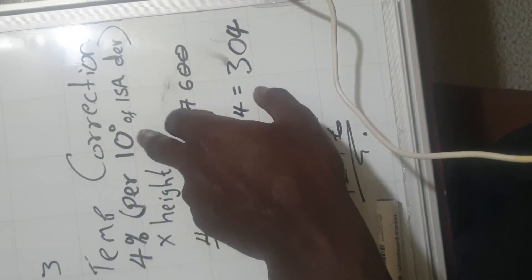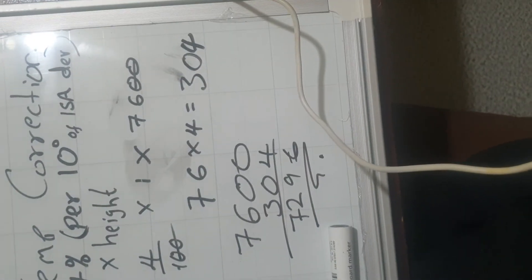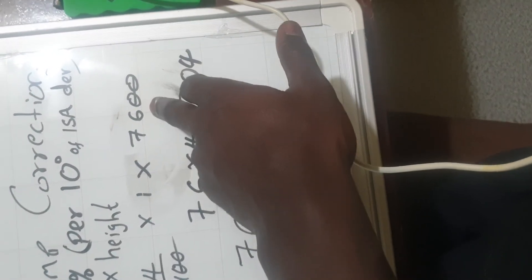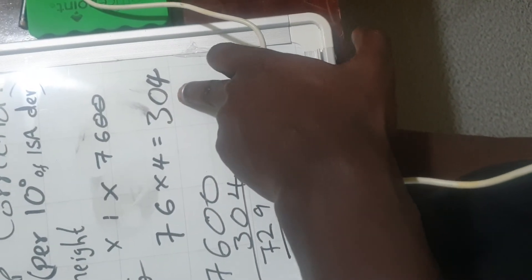So in our case, because it was 10, you just put 1. So it's 4% times 1 times what we have corrected for, the altitude height that you have corrected for, which is 7,600 feet. So if you do that, you get 76 by 4, which gives you 304. So 304 is the temperature correction.